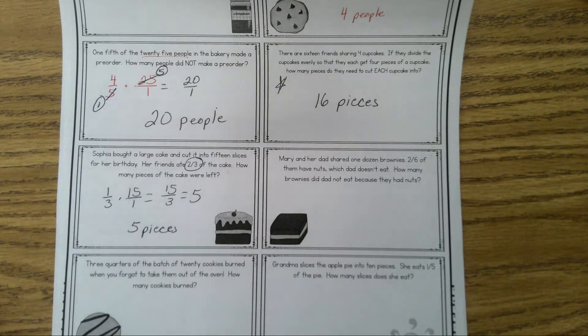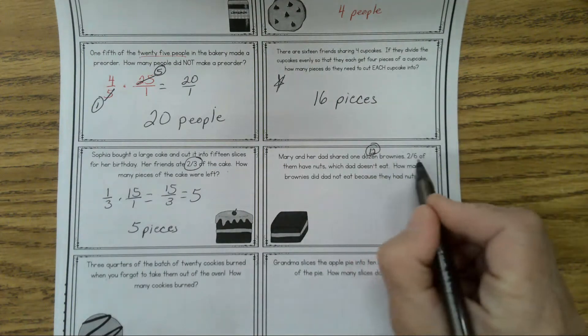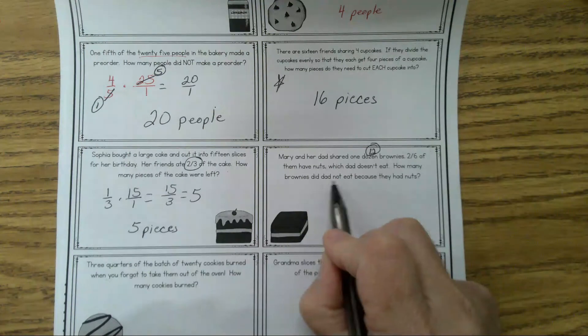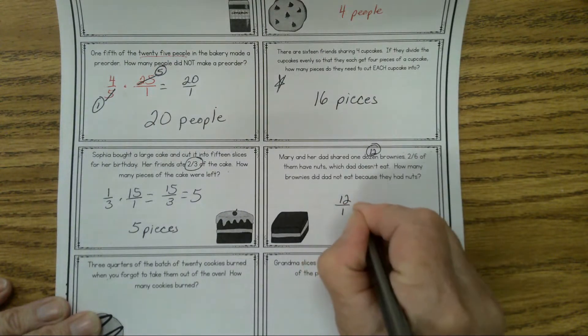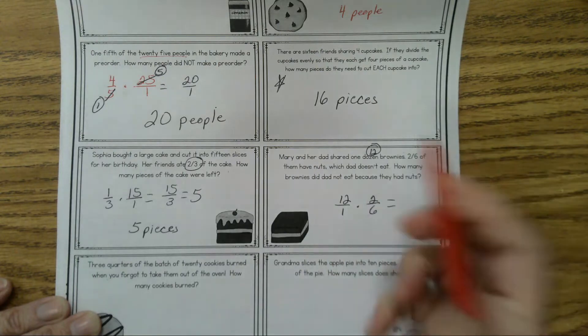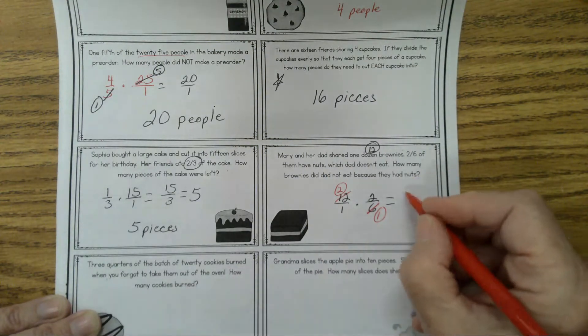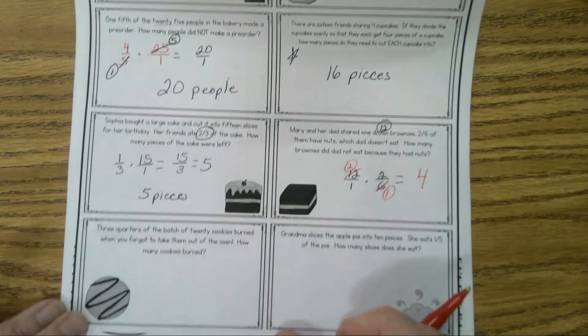Sophie, tell me about the next one. How many are in a dozen? 12. So let's put 12 there. Shared one dozen. 2/6 of them have nuts. How many brownies did Dad not eat because they had nuts? Well, you're just going to take 2/6 times 12, right? So 12 over 1 times 2 over 6. Simplify it before you multiply. 6 divides 6, and 6 will divide 12 two times. So how many brownies did Dad not eat? Four. There are four brownies that have nuts.